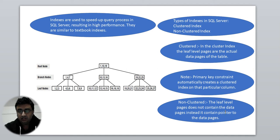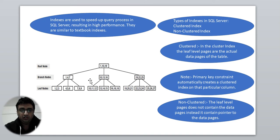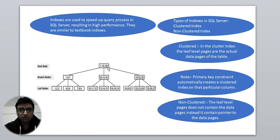For the non-clustered index, the leaf-level pages do not contain the actual data pages. Instead, they contain a pointer to the data pages. A pointer, as you may recall from data structures, is simply a memory location. So in a non-clustered index, the nodes just hold the memory location pointers to your actual data pages. The root node sits at the top of this structure.